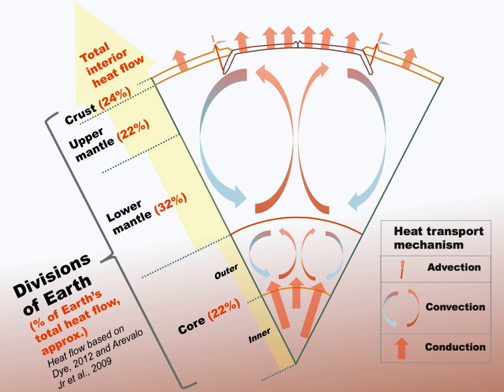However, B. Buffett in 2009 estimated the viscosity of the inner core and found that such convection could have happened, especially when the core was smaller.